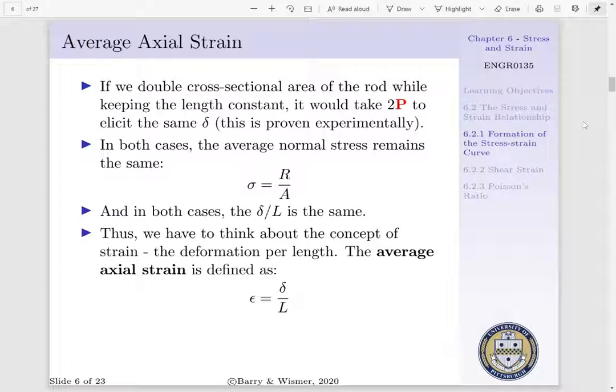In both cases, our deformation delta is going to be the same, and our initial length L is the same. Thus, the ratio of delta per L is the same. For us to begin to remove some of our geometrical dependence, we have to introduce the concept of strain.